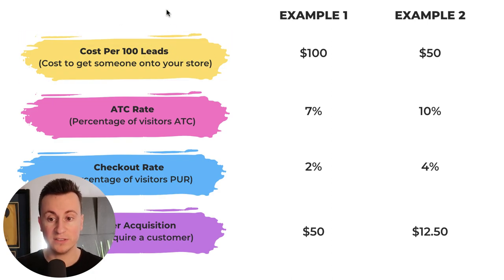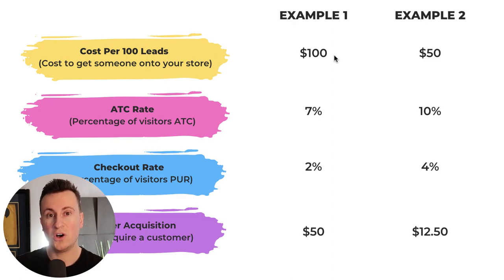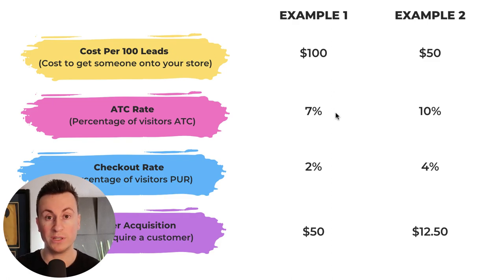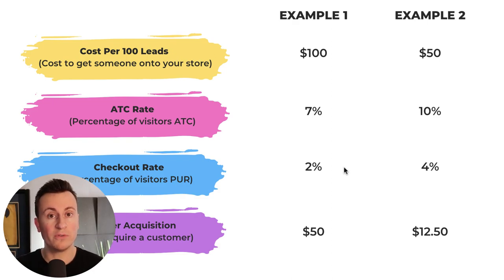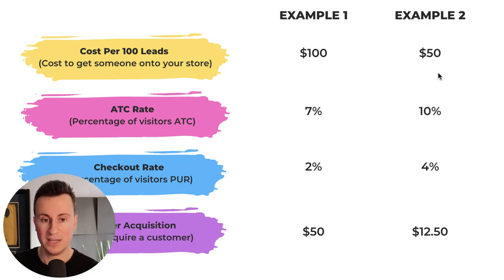In example one, the cost per 100 visitors is $100 — so essentially $1 per person, which translates to a cost per link click on your ad platform. We have an add-to-cart rate of 7%, so 7 of those 100 people hit the add to cart button. And an overall conversion rate of 2% — meaning 2% of visitors actually complete the process and buy your product. I'll give you some ballpark figures at the end of the video so you can see exactly where the funnel is failing you.